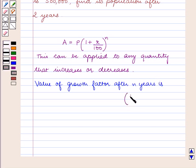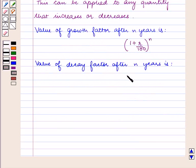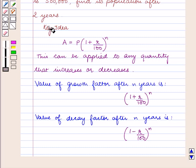And the value of decay factor after n years is 1 minus R upon 100 raised to power n. With this key idea let us proceed with the solution.